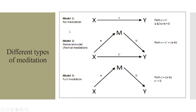There are different types of mediation. The first is no mediation — only the direct effect, where x is affecting y directly. The second is partial mediation, where x is affecting y directly and also through an indirect path, so the total effect is c-dash plus ab. The third is full mediation, where there is no direct effect — only the indirect effect a times b.